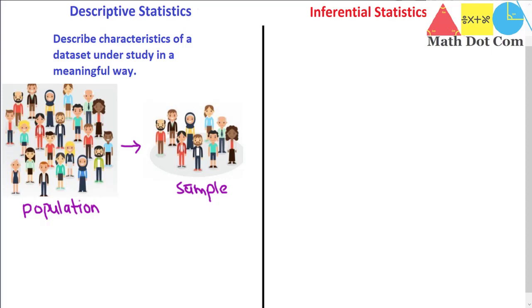We have to make the analysis of this sample. We are not going to make decisions about this population from this sample — we are not going to do this in descriptive statistics. This is the basic difference between descriptive and inferential statistics. Whatever analysis we do of this sample is limited to this sample; we cannot extend it to the population. There is no probability in it — it's definite whatever analysis we are going to do.